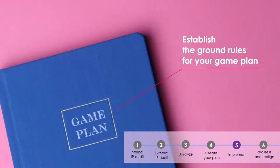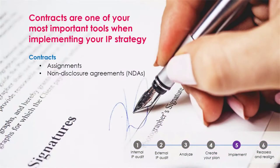In this section, we discuss the importance of training your employees on the basics of IP, making sure people around you know what they can and can't say or do with their IP, and lastly, the importance of having agreements in place. Now let's go over some contracts that you need to be familiar with — what they are and how you can use them.